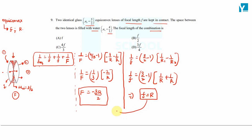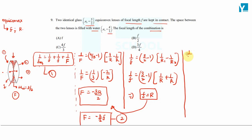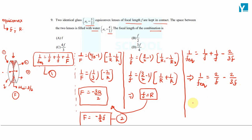Substituting R = f into the water lens equation: 1/F = -2/(3f). Now putting everything into the combination formula: 1/f_equivalent = 1/f + 1/F + 1/f = 2/f + (-2/(3f)) = 2/f - 2/(3f) = 4/(3f). Therefore, f_equivalent = 3f/4. On looking at the options, option D is the right answer.